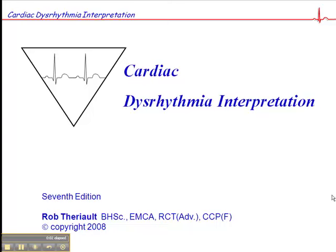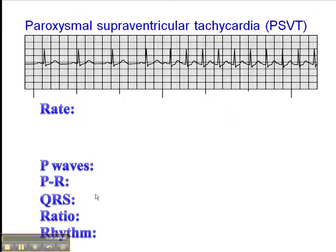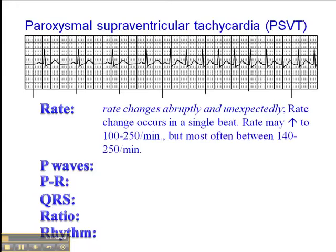This next rhythm is on page 53 of your cardiac dysrhythmia interpretation workbook. This is paroxysmal supraventricular tachycardia, or PSVT, which is essentially identical to SVT. SVTs are paroxysmal in nature, but when we see a sustained SVT, we simply call it SVT. When we see the abrupt beginning or the abrupt end of the SVT, then we can say that it's paroxysmal. But the two rhythms are essentially the same.